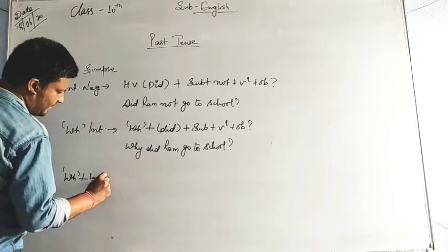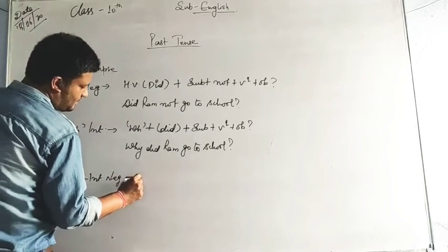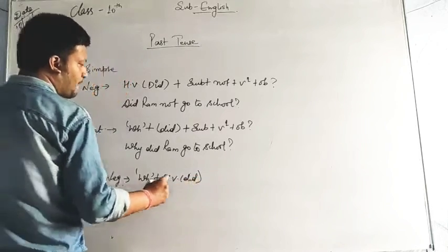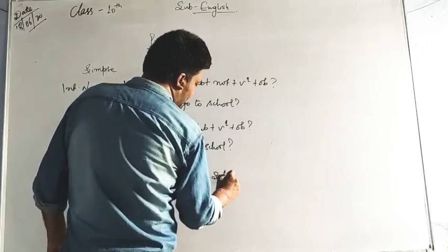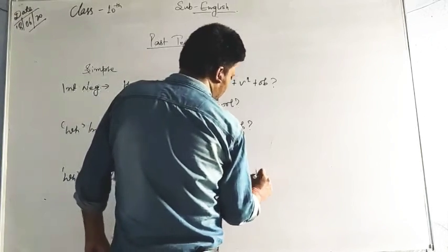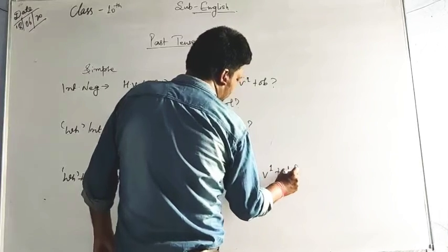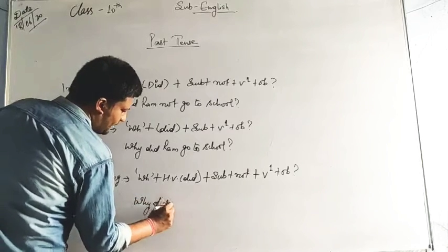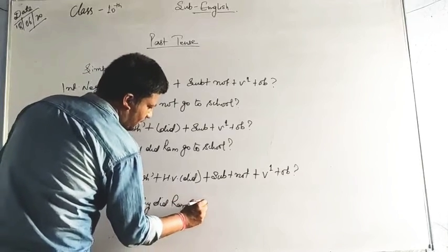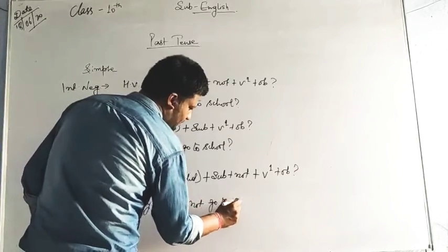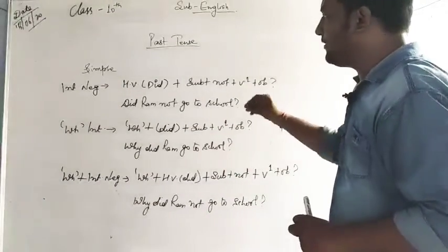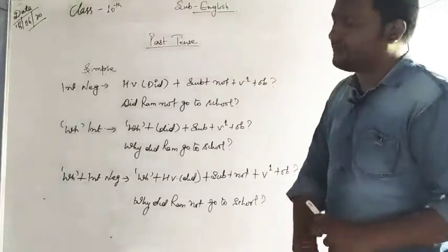The WH interrogative negative formula is: WH word + did + Subject + not + Verb first form + Object — giving us: Why did Ram not go to school? So these are all the formulas we will need to solve simple past tense.